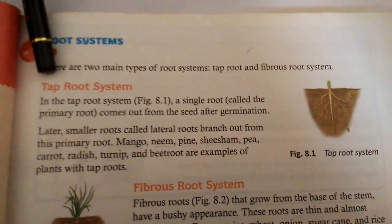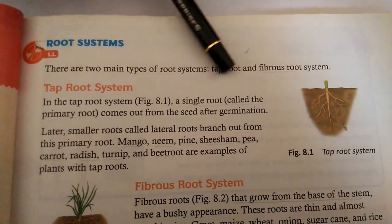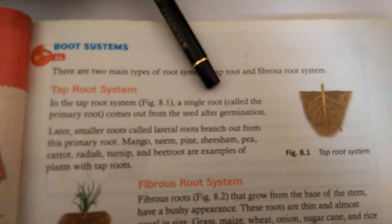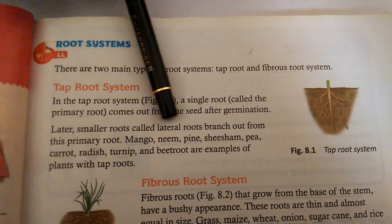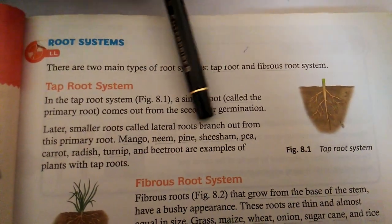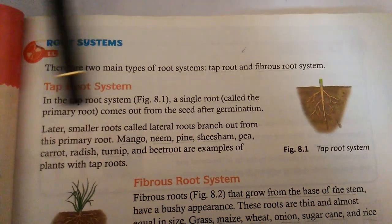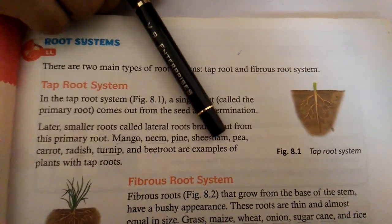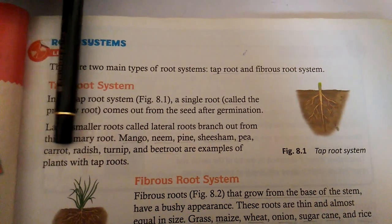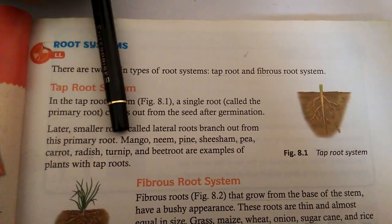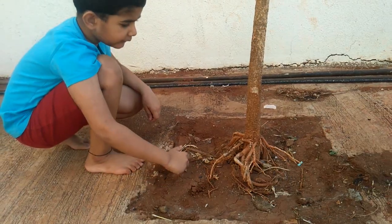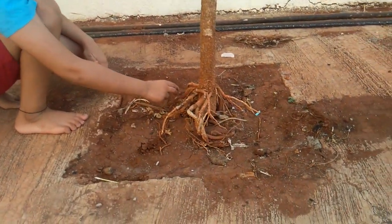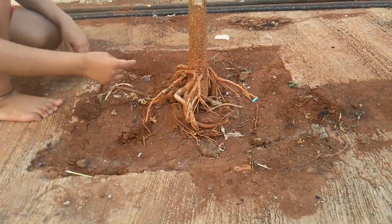In the tap root system, a single root called the primary root comes out from the seed. Mango, neem, pine, shisham, pea, carrot, radish, turnip, and beetroot are examples of plants with the tap root system. You can see here — this is the tap root system. It has very strong and deep roots.